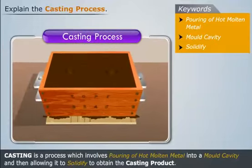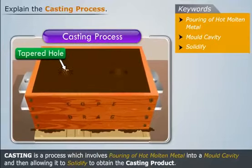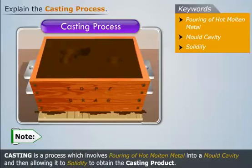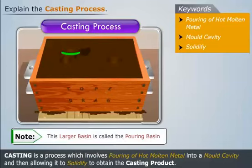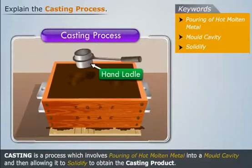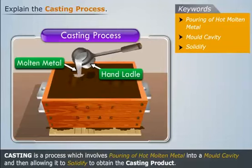As we can see, the tapered hole is too narrow for the proper flow of molten metal, so make a larger basin beside the tapered hole and connect them through a passage. Note that this larger basin is called the pouring basin.